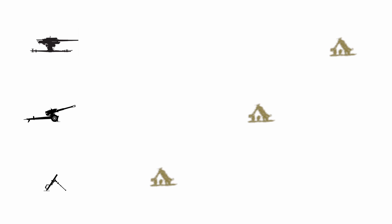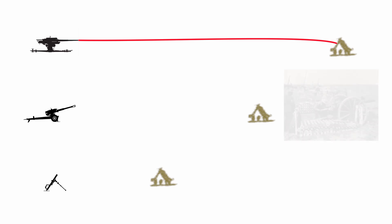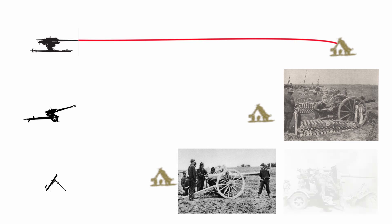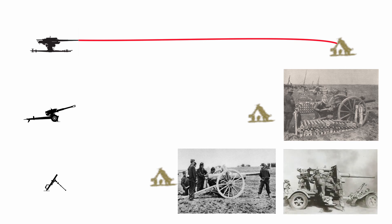A gun has a high muzzle velocity, with its shells flying on a flat trajectory. Examples of these guns can be seen in the World War I field guns, such as the British 18-pounder and French 75, or even the famous German 88mm anti-aircraft gun of World War II. Included in these would be the tank guns of the modern day. They can be used for direct fire through to longer range indirect fire, but the elevation of the artillery piece when it fires remains low.